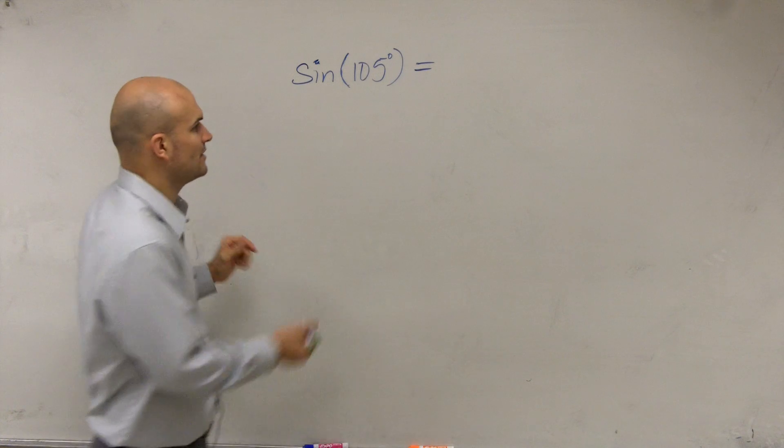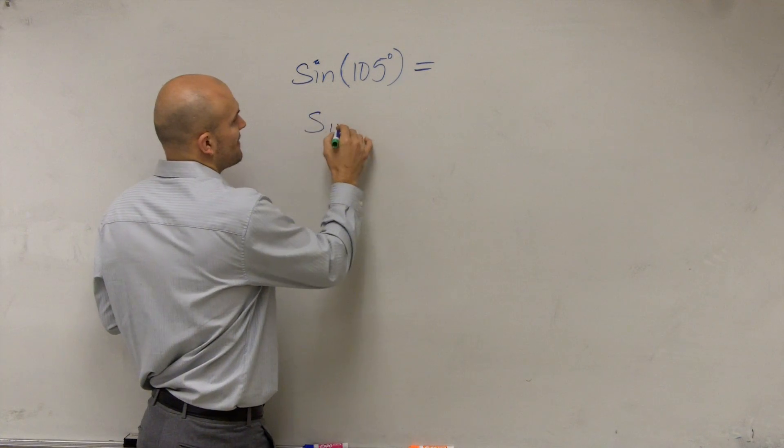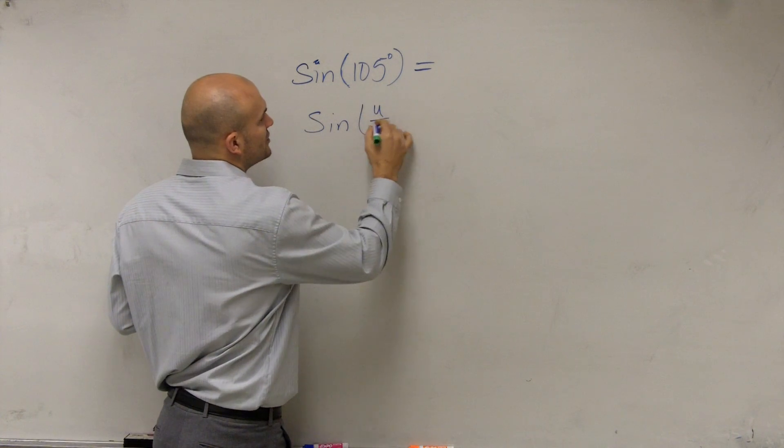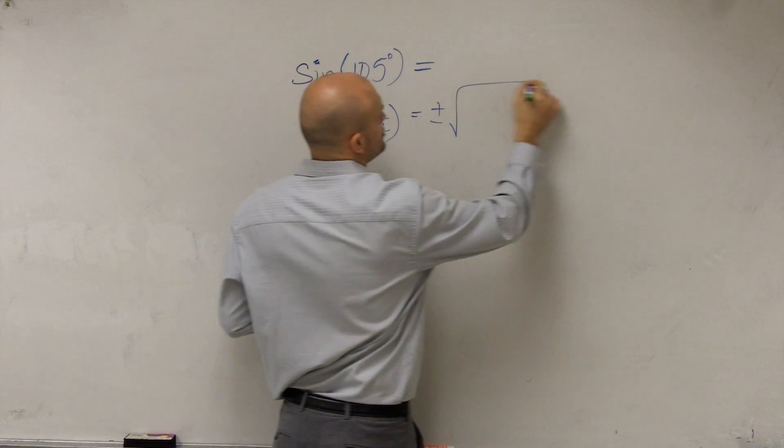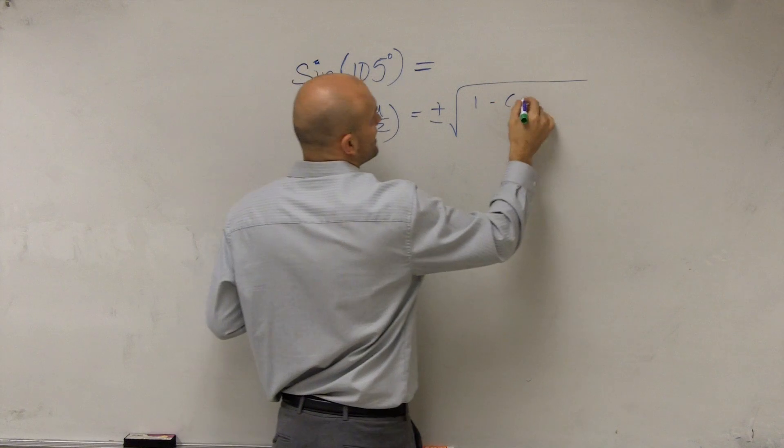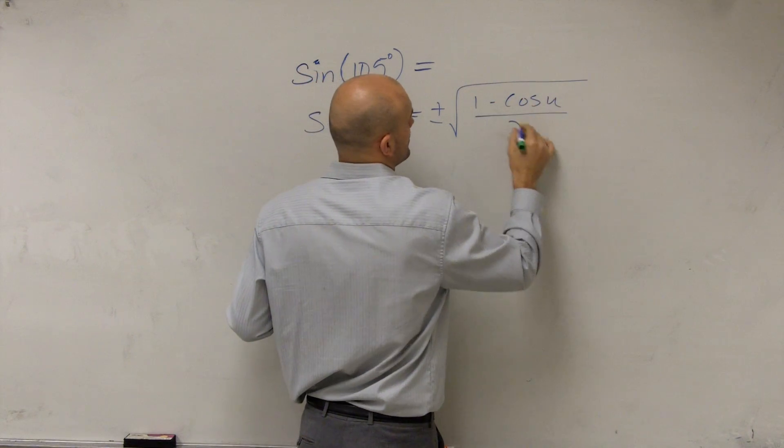What the half angle formula states is if I have the sine of u divided by 2, that's going to equal plus or minus the square root of 1 minus cosine of u divided by 2.